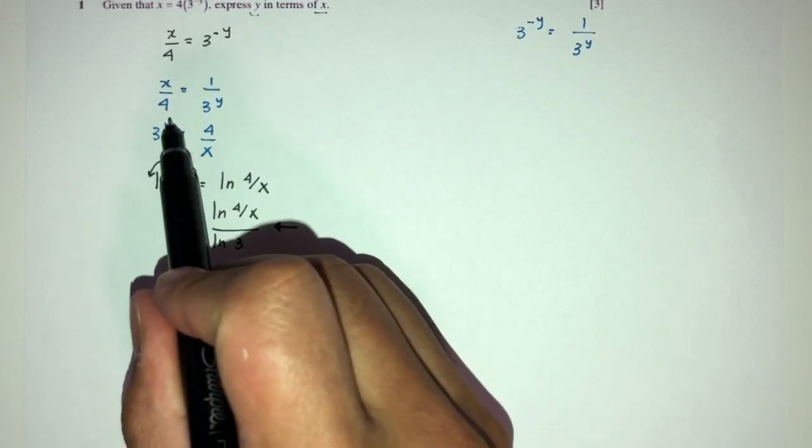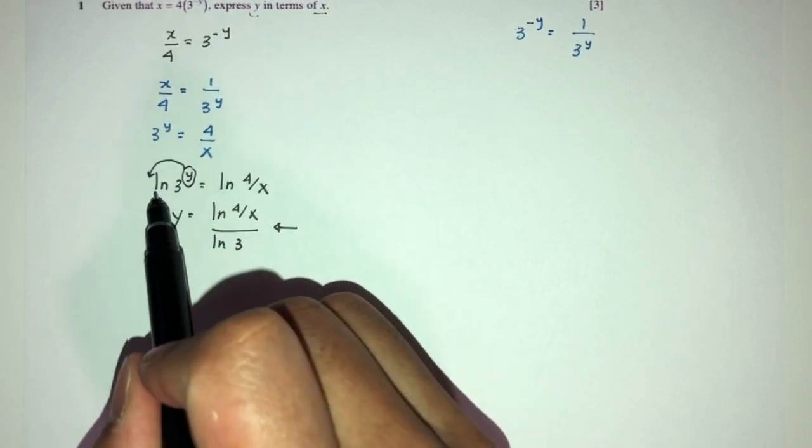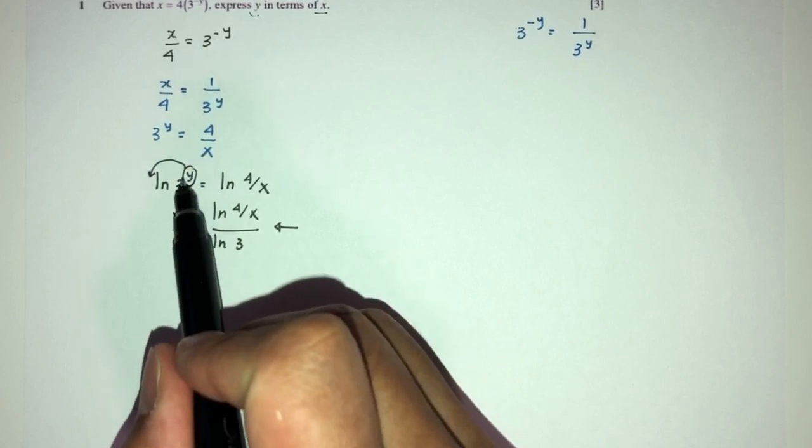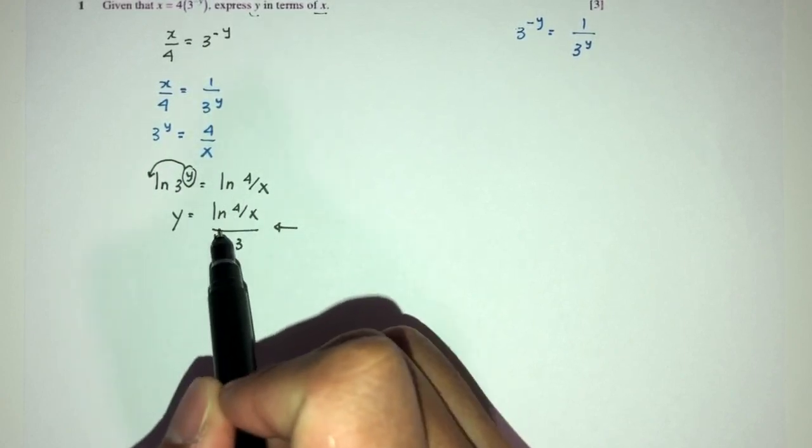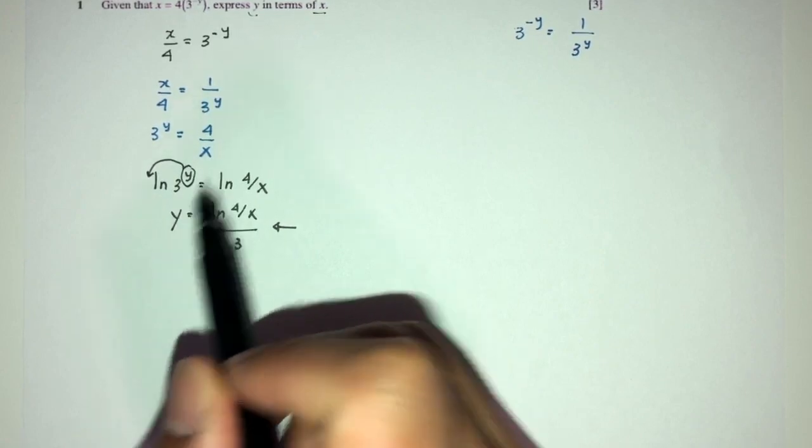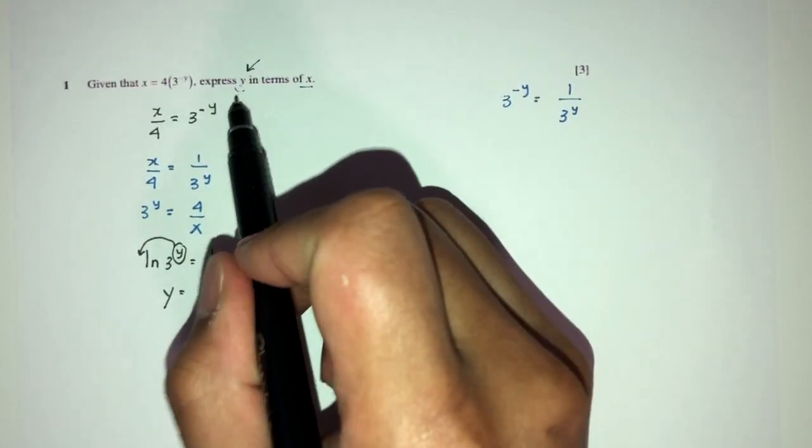To make the powers go down, we have to use log or ln on both sides. Then send this in front, then divide by this one to have this on one side and y on one side to make this become the subject of this formula.